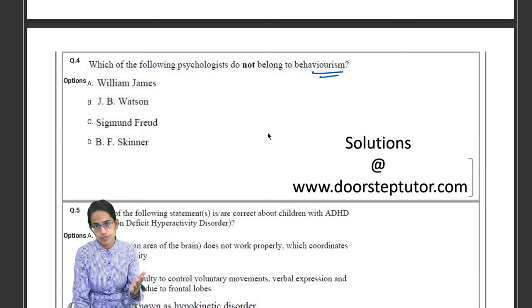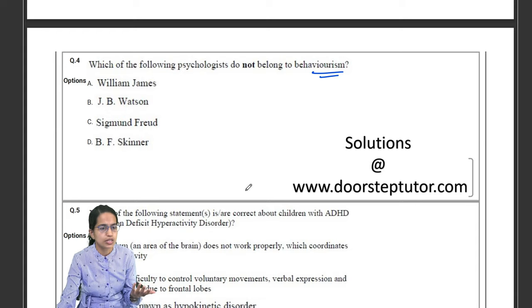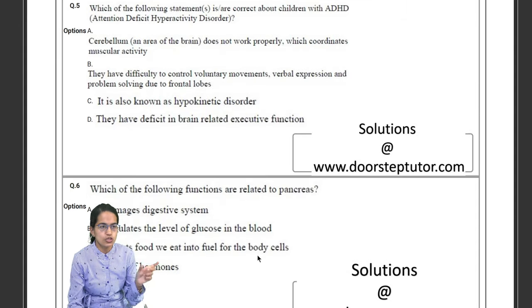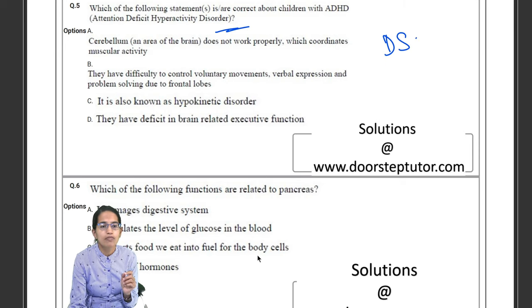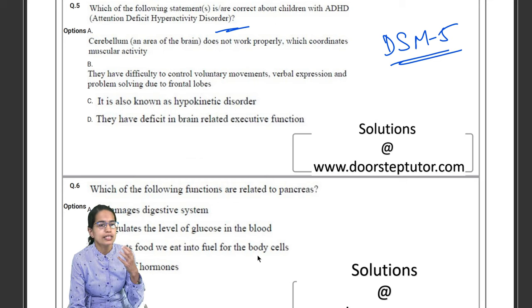Then you have the question about the scholars and to which school they belong, whether they belong to behavioralism, structuralism, functionalism, and so on. The disorder - now disorders are extremely important. DSM-5 you must know very, very thoroughly.